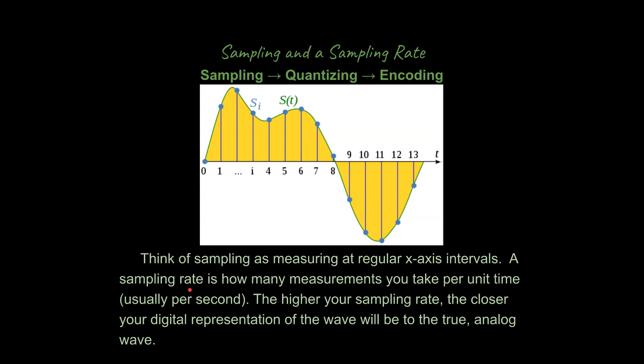So you could say, well, what's sampling? Sampling is going to be taking measurements at regular x intervals. So you could say a sampling rate is how many measurements you take per unit time. And so you can see this would be our analog wave right here.